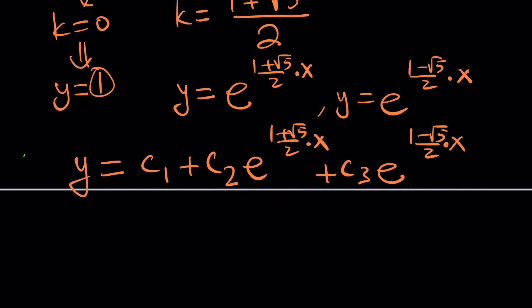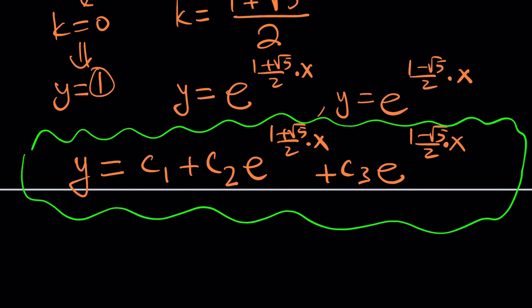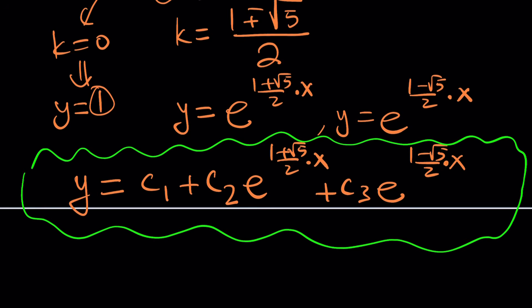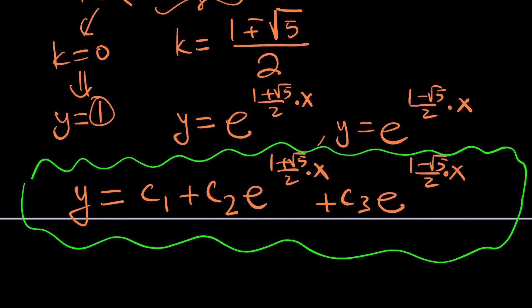Taking a linear combination of all three particular solutions, the general solution is y equals c₁ plus c₂·e^((1+√5)/2 · x) plus c₃·e^((1−√5)/2 · x). This is the general solution to the equation. If we had used the series method, we would probably not have arrived at something this clean, since the expression is quite complex for a power series.